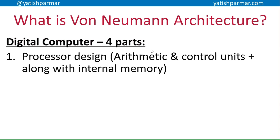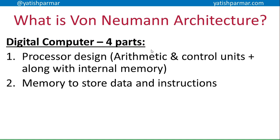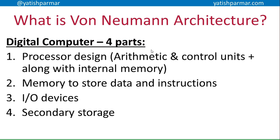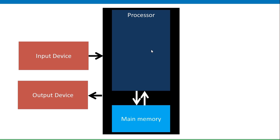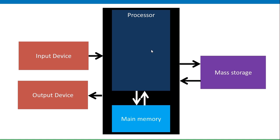It had four parts to it. The processor, where you had arithmetic and control units along with internal memory — registers inside the CPU. You had memory to store data and instructions — that's the main memory. Input and output devices, and then you had some form of mass storage on which programs and data can also be held, ready for use.